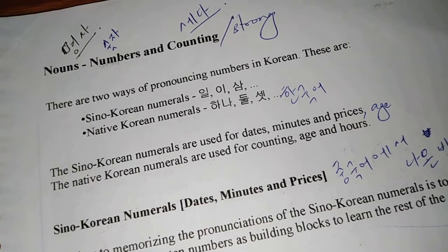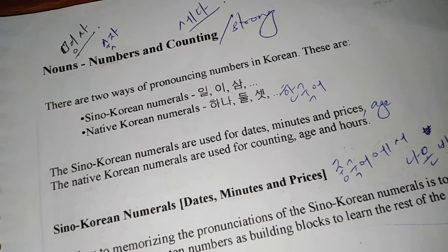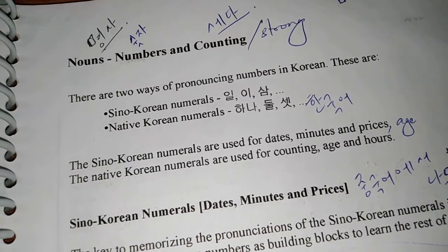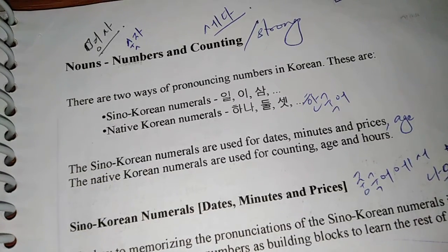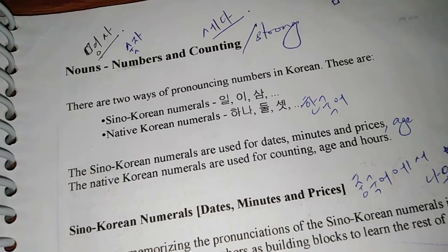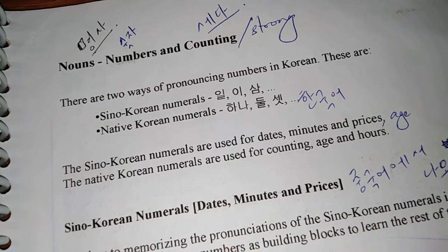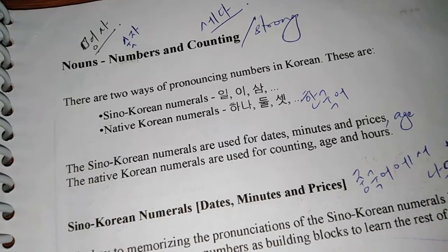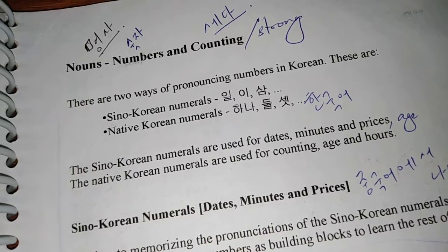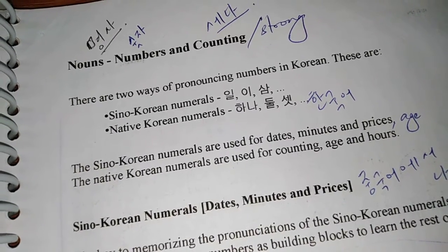You can find this lesson on page number 52 in the material given in the description box. Going into our lesson, we have two number systems in Korean: one is Sino-Korean and one is Native Korean. You could realize what means what pretty much from the names.